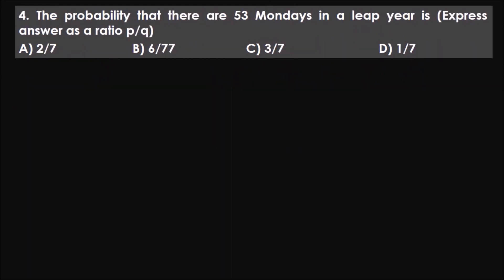This is the next question — you know what to do. The answer is A, two by seven. If you got that, congratulations. If not, here's the solution. Whenever you have such a question, one thing common is 53 — they will always ask you for 53 Mondays, Tuesdays, Wednesdays, etc., but that doesn't change the answer. 53 will always be common.